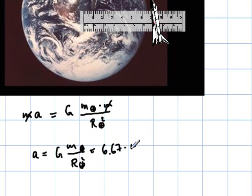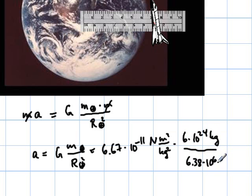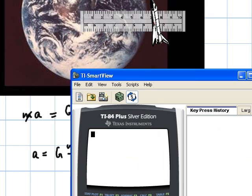6.67 times 10 to the negative 11 Newton meter squared per kilogram squared, pretty bad unit for the gravitational constant. Times the mass of the Earth, which they give us in the problem is 6 times 10 to the 24 kilograms, divided by the radius of the Earth, which they give us in the problem is 6.38 times 10 to the 6 meters. And that needs to be squared. And now I plug this in on the calculator. So, that was 6.67.